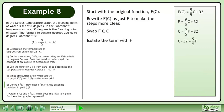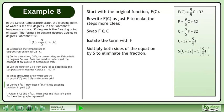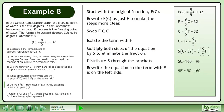Isolate the term with f. Multiply both sides of the equation by 5 to eliminate the fraction. Distribute 5 through the brackets. We write the equation so the term with f is on the left side.